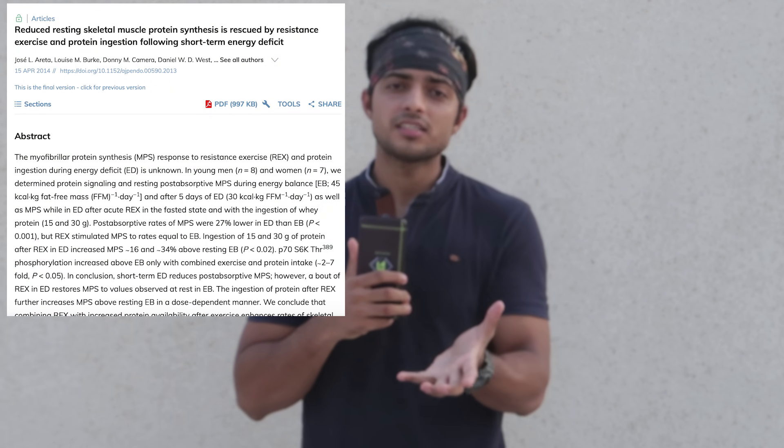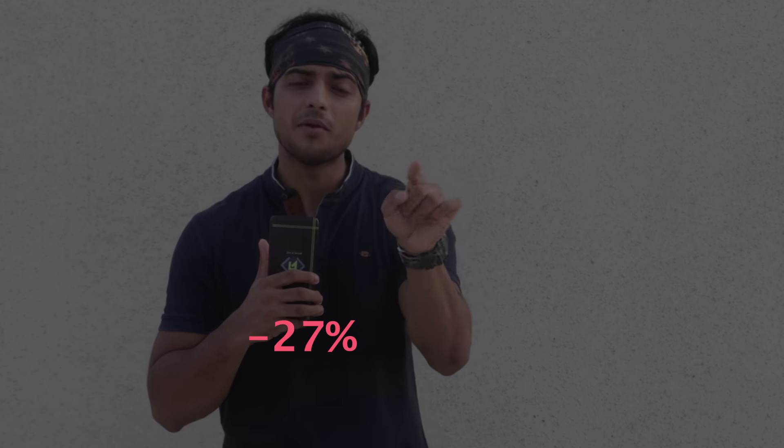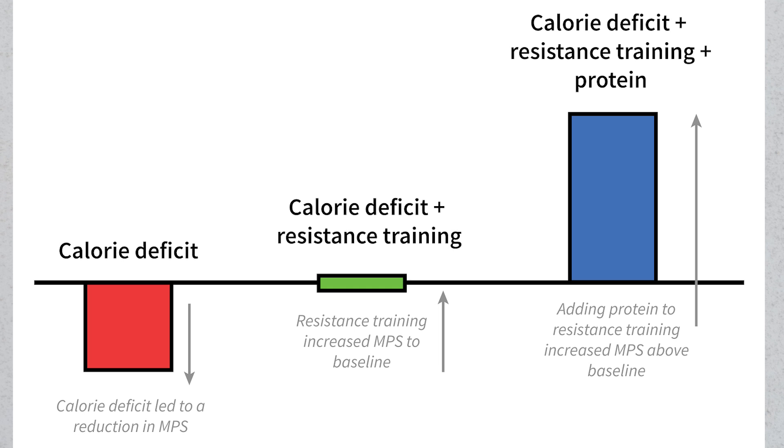In a 2014 research, people who were on a caloric deficit had their muscle protein synthesis (MPS) lowered by 27 percent. However, those who followed a diet and exercise plan saw their MPS come back to normal maintenance levels. The group given a high protein diet combined with weight training saw their MPS raised by 34 percent - that's incredible. This means even with a caloric deficit, if you do weight training and maintain normal protein intake, you can preserve your muscle mass.